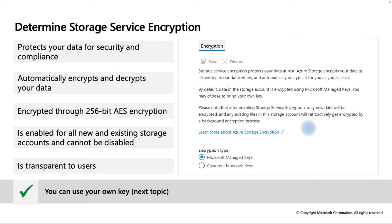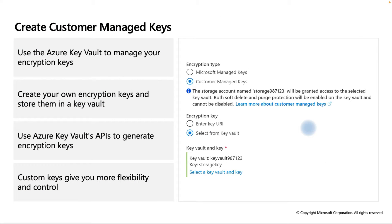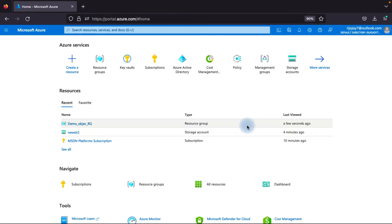You can use either a Microsoft managed key or a customer managed key for encryption. For the customer managed key, we will show you in the Azure portal how to create one. You use Azure Key Vault to manage your encryption keys - you create an Azure Key Vault, then create a management key for encryption. You can create your own encryption key and store it in the Key Vault. Custom keys give you more flexibility and provide a higher security level. Now let's go to the Azure portal so you can understand this more easily.